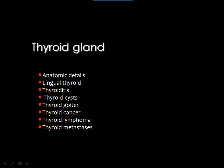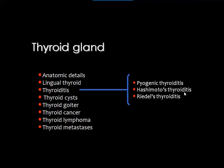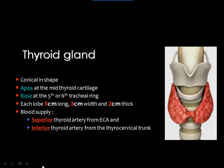Moving to the thyroid gland: the gland is conical in shape, with the apex near the middle of the thyroid cartilage and the base at the fifth or sixth tracheal ring, measuring 5 cm long, 3 cm wide, and 2 cm thick. Blood supply to the superior part comes from the superior thyroid artery of the external carotid artery, and the inferior thyroid artery comes from the thyrocervical trunk of the subclavian artery.